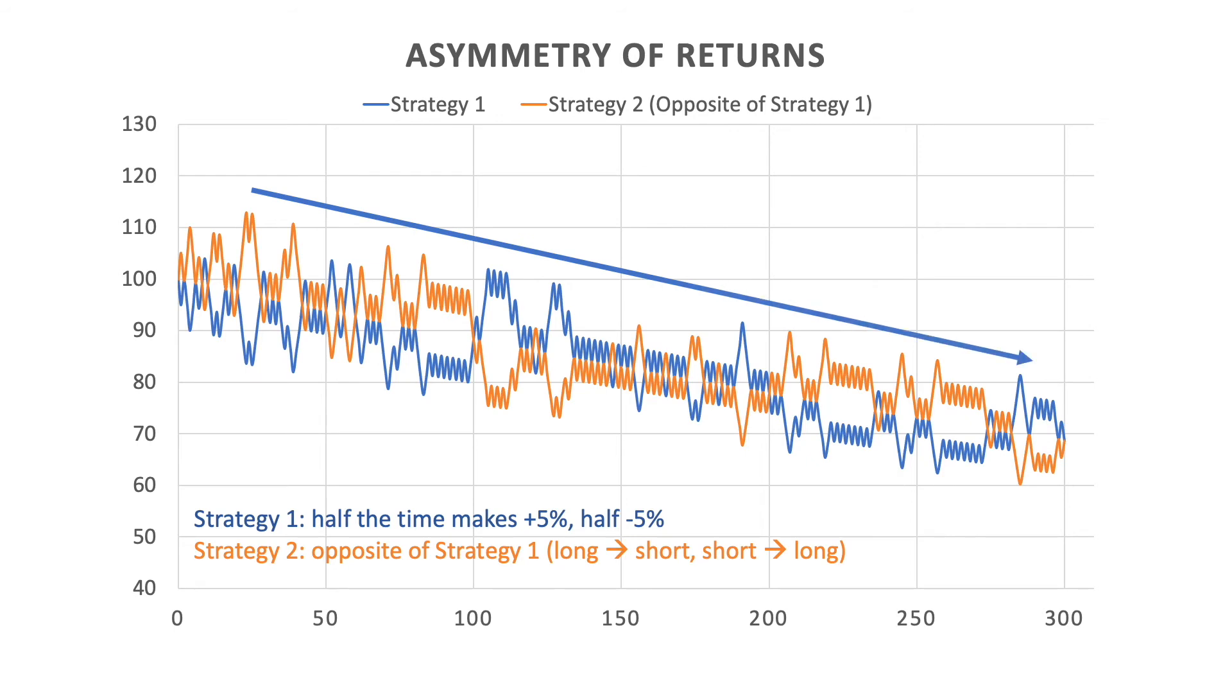Now you take the opposite signal of the strategy. And you see, even though on a daily basis, your profit and loss switch directions, overall, you are still losing money consistently. After a year, both lost about 30%.